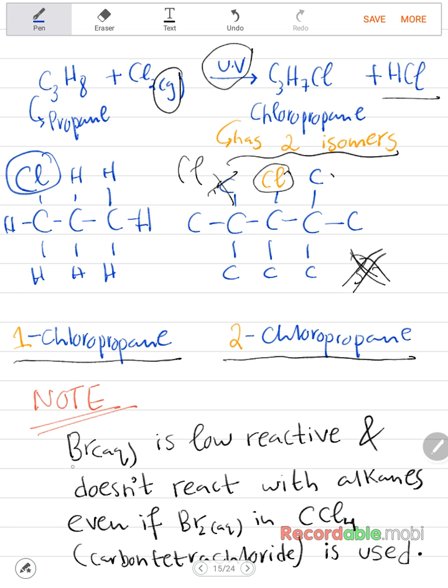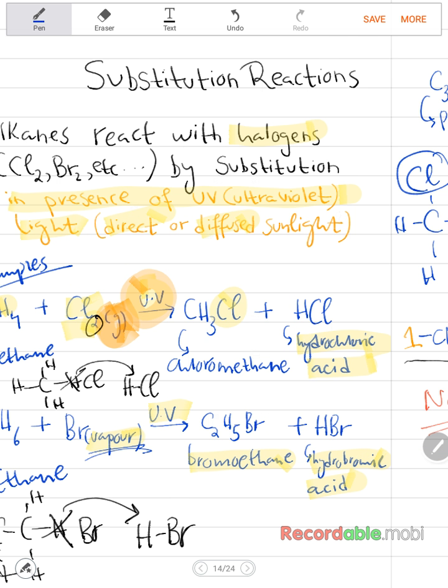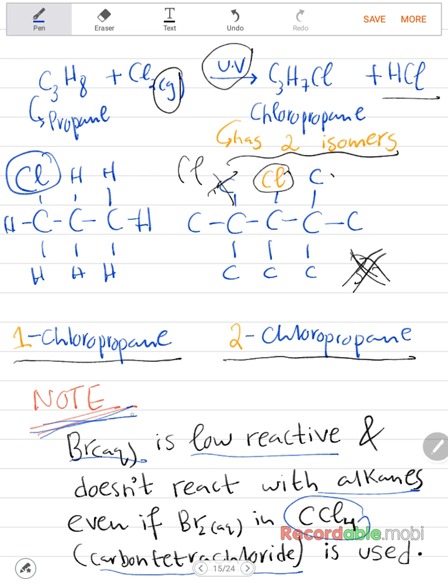Another note. Bromine aqueous, as I said, is low reactive and does not react with alkanes. It has to be in vapor state. Even if it's put in carbon tetrachloride, carbon tetrachloride is a solvent which is usually put with the bromine to make it more reactive or easier to react with hydrocarbons, but still even if it's put, it won't react. Even if the bromine aqueous is put in carbon tetrachloride and alkane, it won't react. So it needs to be in a vapor state. That's just a quick note. It's not mega important, but I just thought of mentioning it as well.